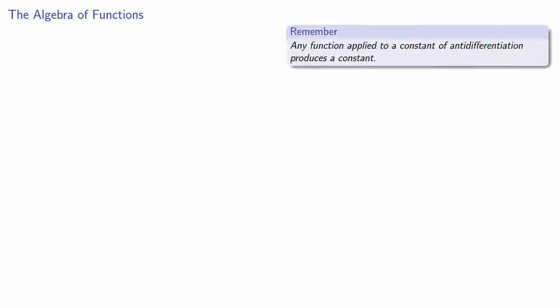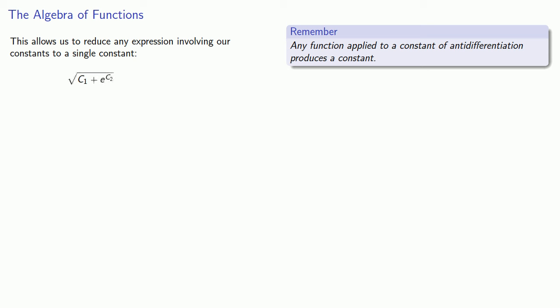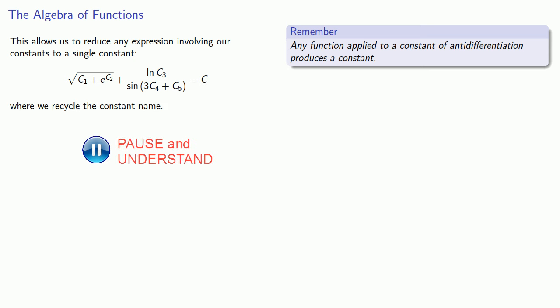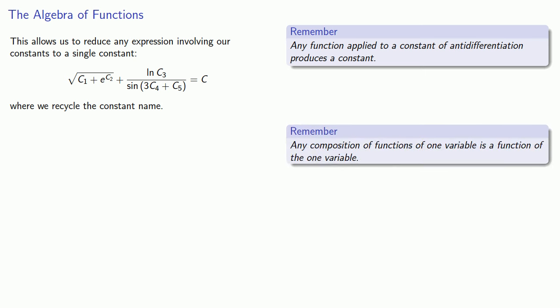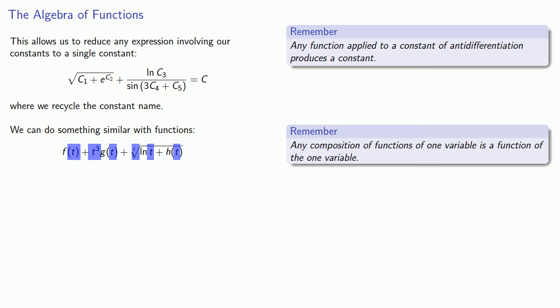One of the problems we'll face is that we may get buried in a mountain of notation. So it's useful to remember that any function applied to a constant of anti-differentiation is going to produce a constant, and this allows us to reduce any expression involving our constants to a single constant. Analogously, any composition of functions of one variable is a function of one variable, so we can absorb complicated compositions into a single function of t, recycling the function name.